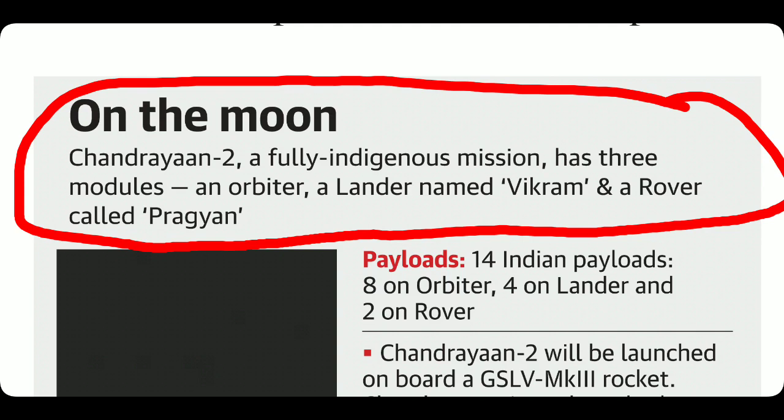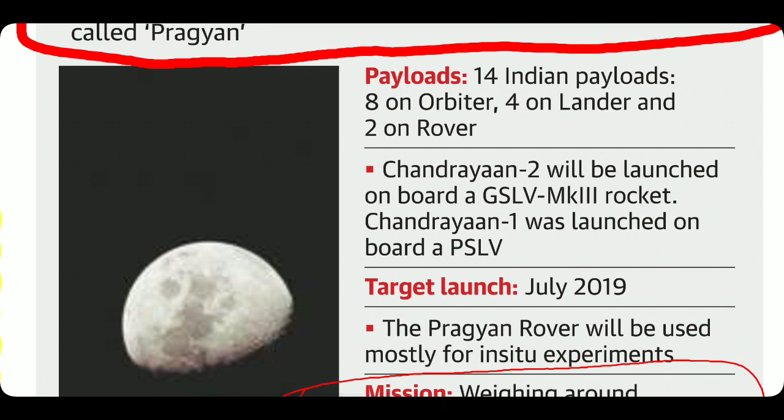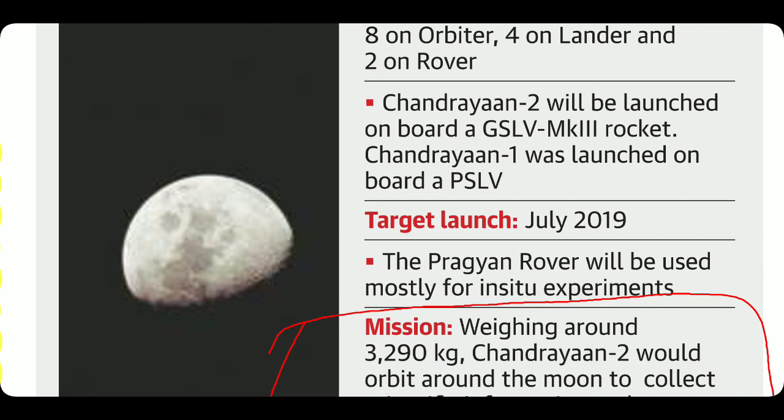The three modules are: orbiter (8 payloads), lander Vikram (4 payloads), and rover Pragyan (2 payloads). It will be launched by GSLV Mark 3. An important difference: Chandrayaan 1 used PSLV, but Chandrayaan 2 uses GSLV Mark 3. Target launch is July 2019.